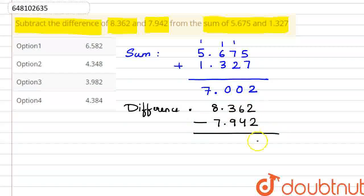2 minus 2 is 0. 6 minus 4 is 2. 3 minus 9 is not possible, so we will carry over here. It will be 7 and this will be 13. 13 minus 9 is 4. And the decimal point. 7 minus 7 is 0. So here comes our 0.420.